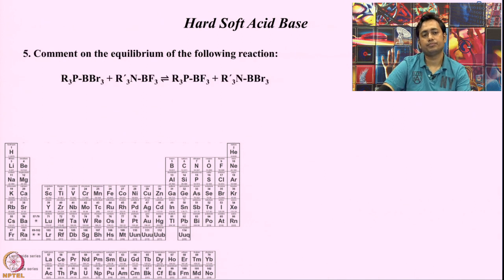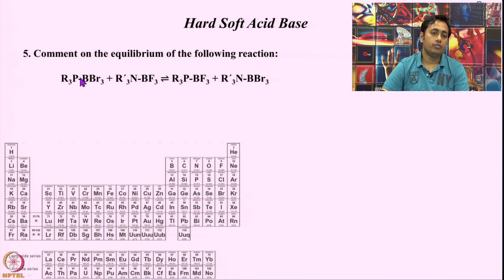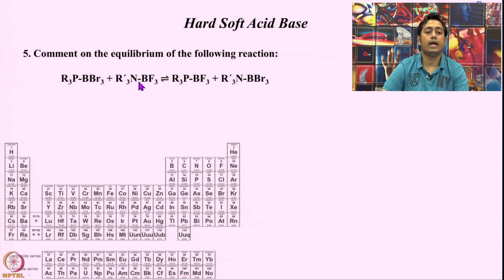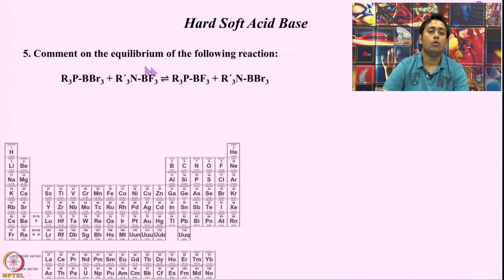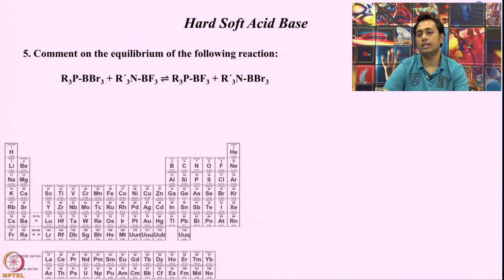In the last question of this segment we look at a particular reaction involving a phosphine-boron bond and an amine-boron bond. There is a phosphine connected to boron containing bromide, and an amine connected to boron containing fluoride. They exchange the boron counterpart: phosphine becomes connected to the boron with fluoride and the amine becomes connected to the boron with bromide. We want to find out where this equilibrium lies — does the reaction go forward or stay on the left-hand side? Can we understand this using the hard-soft acid-base system?